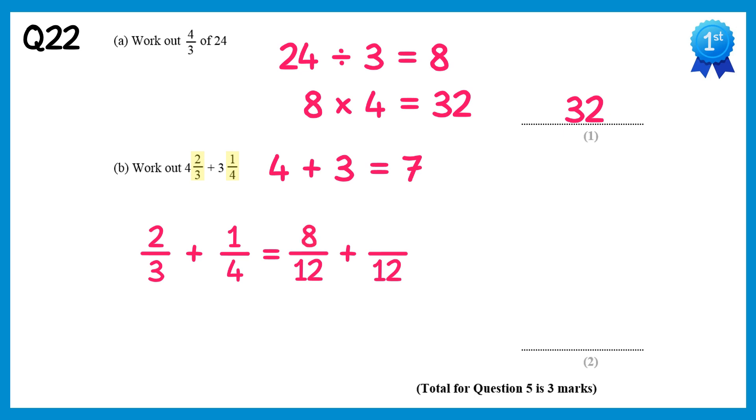If we look at 1 quarter now, to get from 4 to 12, you times by 3, so times 3 on the top, 1 times 3 is 3. We can now add these together, so if you add the numerators, 8 add 3 gives you 11, and you keep the denominator as 12. If you combine both parts together here then, the answer is 7 and 11 over 12.